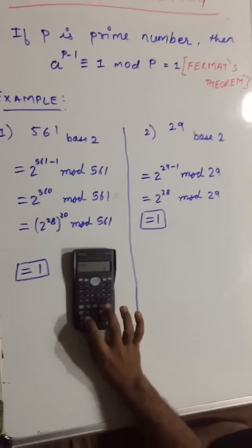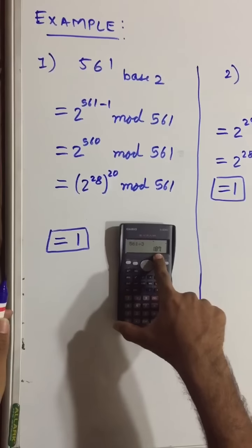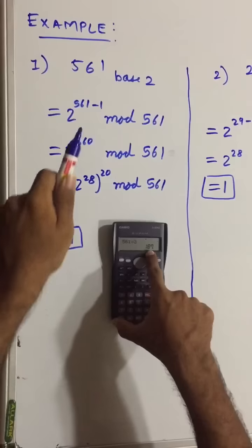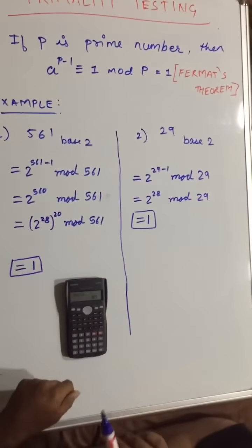If you divide 561 with 3, you will be getting a perfect answer. It means that 561 is a composite number. It is not a prime, but primality testing says that it is a prime number.